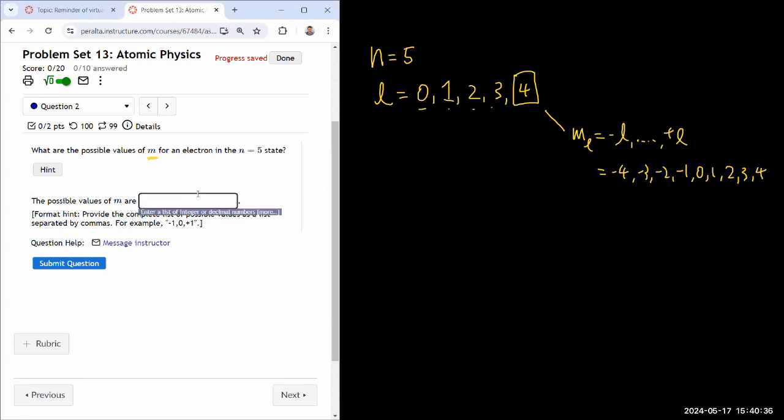Let me just list them all. Minus 4, minus 3, minus 2, minus 1, 0, 1, 2, 3, 4. And I don't think they have to be ordered. Just an unordered list.